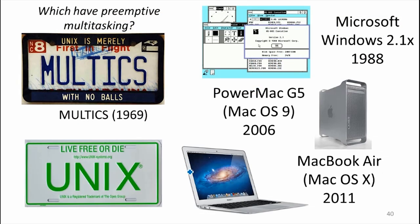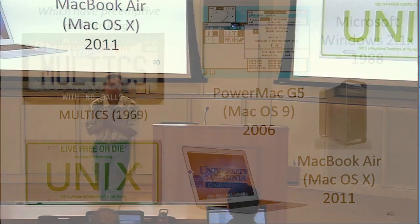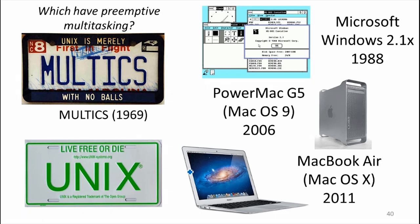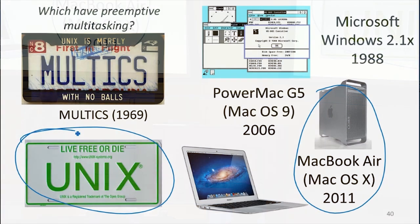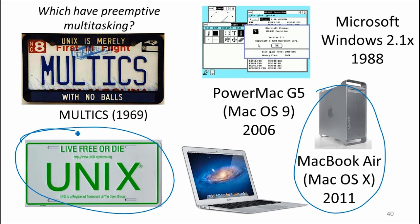Here are some operating systems — which ones have preemptive multitasking? The answer is all the ones that end in X. Windows actually did have preemptive multitasking from version 2.1, so it had it much earlier. Mac did not have it in OS 9 but did have it in OS X. Multics did support multitasking but did not have preemptive multitasking — at least the early versions only gave the supervisor control when a program did some operation to yield control.